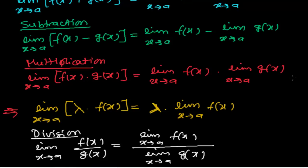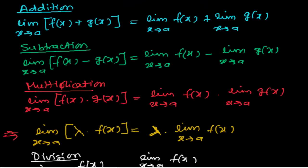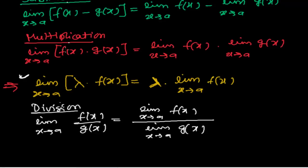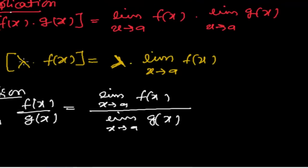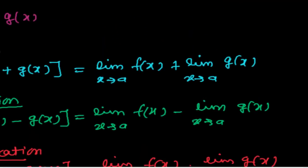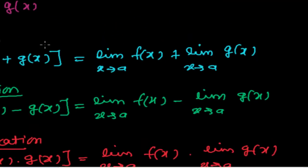So these are the four basic algebra of limits: addition, subtraction, multiplication, and division. There is also the special case when some function is multiplied by some constant, where we apply that formula. These are the fundamental concepts — the algebra of limits. In the next videos, we'll be applying this algebra of limits to some examples and learning their applications. We'll meet again in the next video with different kinds of problems. Bye!